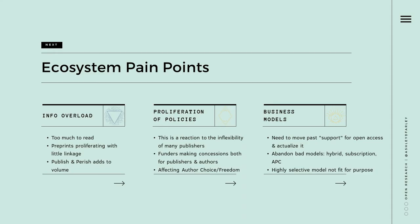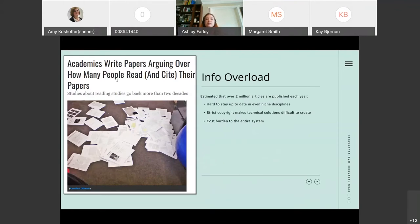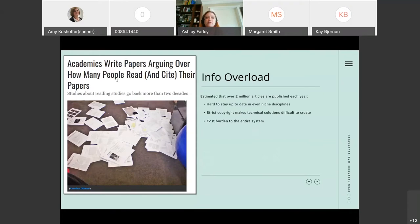We're going to start with the ecosystem pain points: the information overload space, a proliferation of policies, and then a little deep dive into some of the different business models around publishing. Right now we are definitely experiencing a lot of information overload. Even in niche areas of research, it can be quite hard to stay on top of all the relevant research. It's estimated there are over 2 million articles published each year. We've been pitched quite a few technological solutions to help people wade through all the information, but strict copyright is making that very difficult.